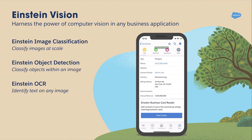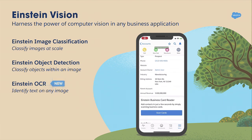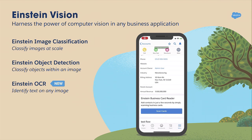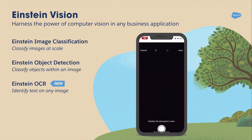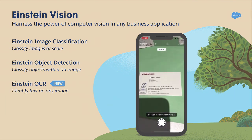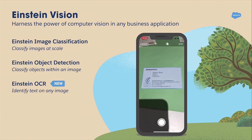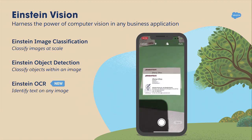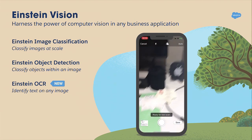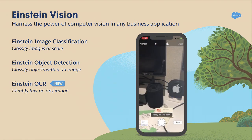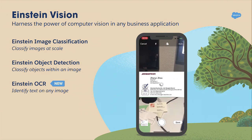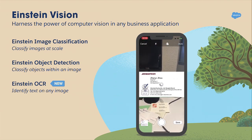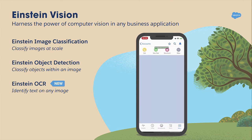Our newest product is Einstein OCR, or Optical Character Recognition. Given a scanned image with text in it, it helps you extract all the text out of it, thereby enabling you to insert records in Salesforce. Pretty neat.